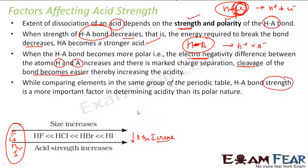The electronegativity difference is almost the same for all elements in the group, so that doesn't make much difference, but the bond strength differs. As the size increases, the bond strength becomes weaker.